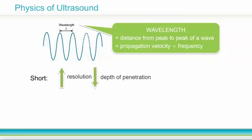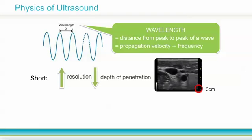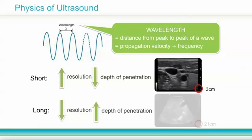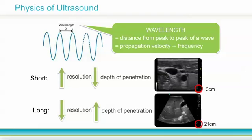Shorter wavelengths have better image resolution, but less depth of penetration. Conversely, longer wavelengths can penetrate more deeply, but create images with less sharp resolution.